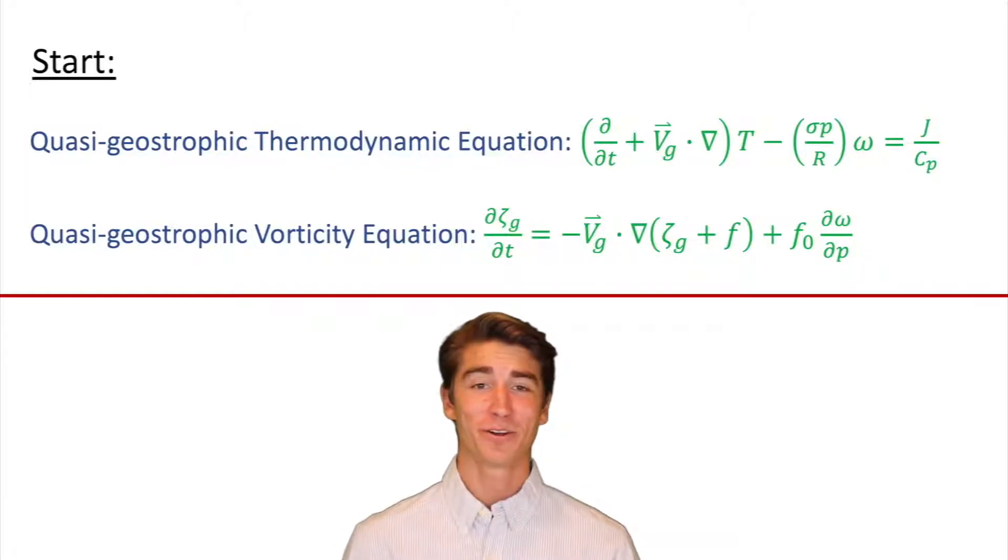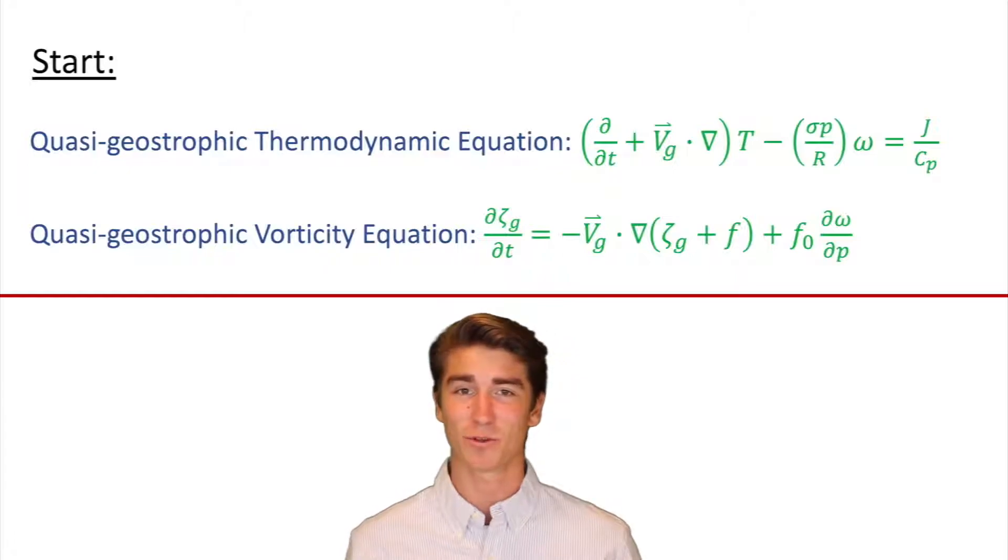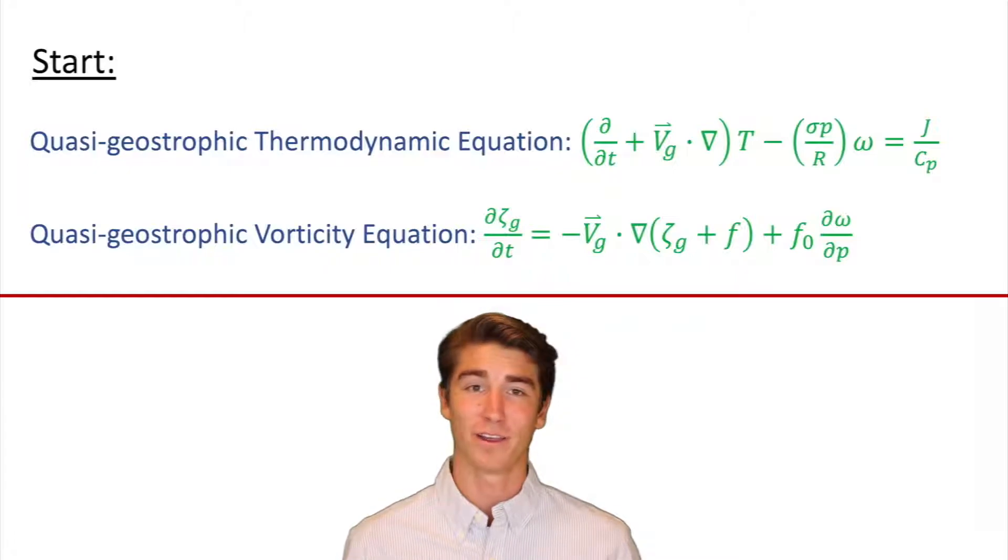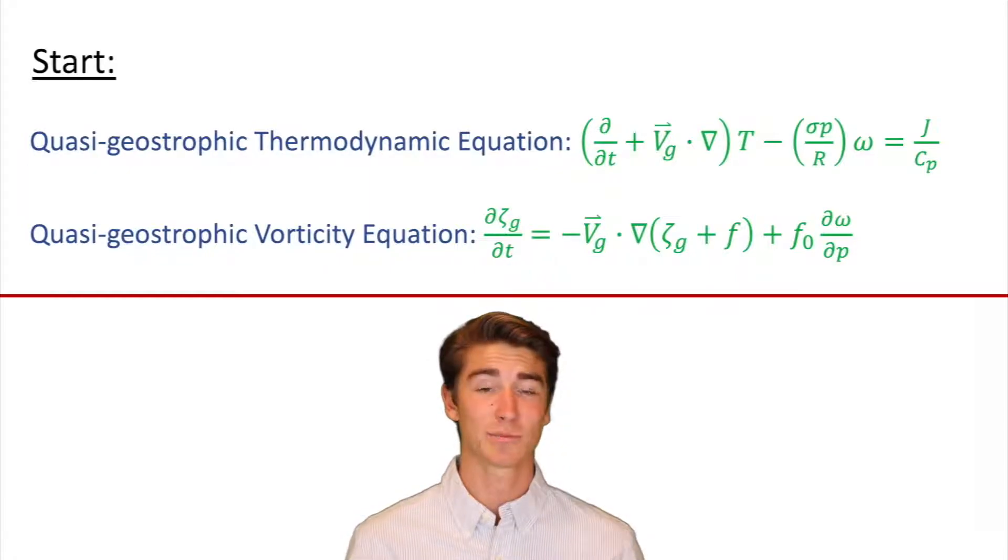Hello and welcome back to Master Meteorology Advanced, the educational weather series diving into the math and physics that drive weather. In today's video we're going to be deriving the quasi-geostrophic Omega Equation, one of the most important equations in all of meteorology. Now if you're looking for the video that goes into the Omega Equation describing the terms and symbols, check out my channel for that one. In today's video we're just going to be deriving the equation, not explaining it.